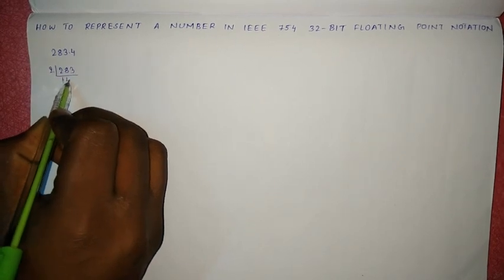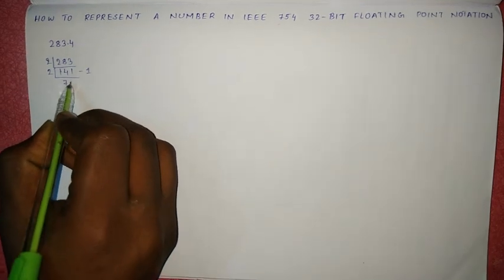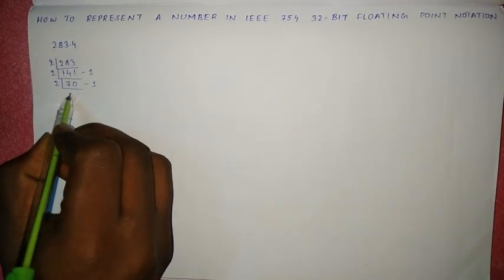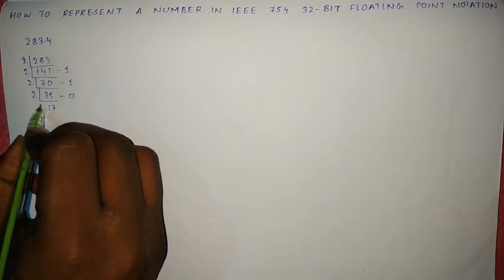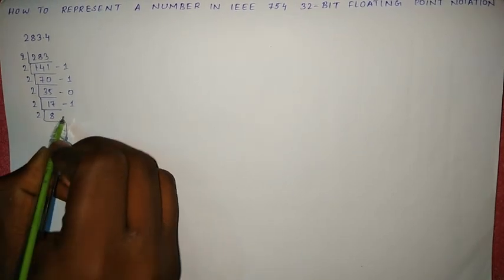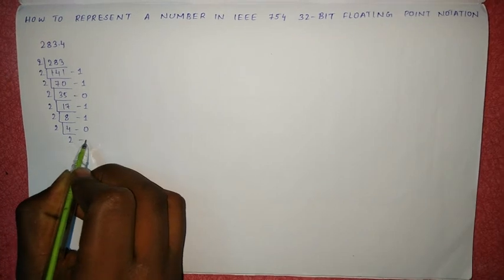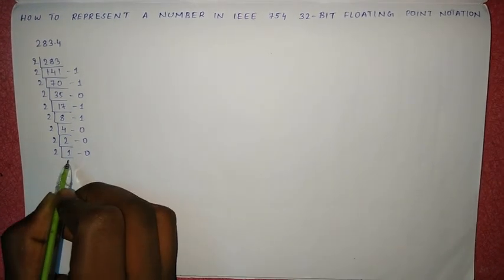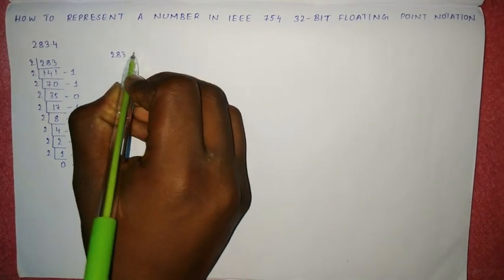Dividing 283 by 2 gives 141 remainder 1. Keep track of the remainder. 141 divided by 2 gives 70 remainder 1. 70 divided by 2 gives 35 remainder 0. 35 divided by 2 gives 17 remainder 1. 17 divided by 2 gives 8 remainder 1. 8 divided by 2 gives 4 remainder 0. 4 divided by 2 gives 2 remainder 0. 2 divided by 2 gives 1 remainder 0. 1 divided by 2 gives 0 remainder 1.